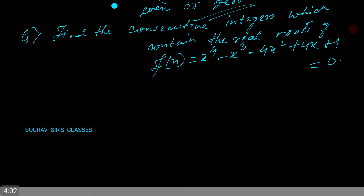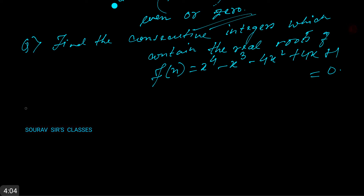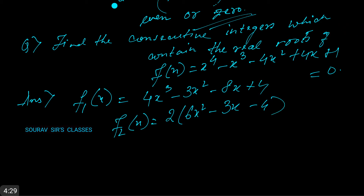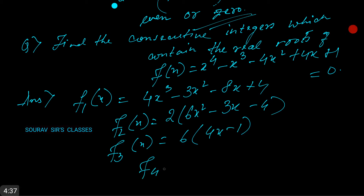Now, how do we solve this? We first find f1, f2, f3, and f4. Just differentiate and you will get: f1(x) = 4x cubed minus 3x squared minus 8x plus 4; f2(x) = 2 times (6x squared minus 3x minus 4); f3(x) = 6 times (4x minus 1); and f4(x) = 24.